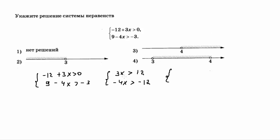В первом неравенстве делим обе части на 3: 3x делённое на 3, x больше 12 делённого на 3, то есть x больше 4. Во втором делим на минус 4: минус 4x делённое на минус 4. При делении на отрицательное число знак неравенства меняется, x меньше 3.